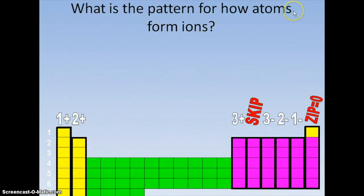All the elements on the periodic table have a pattern for how they're going to form ions. And it goes like this: 1 plus 2 plus 3 plus skip, 3 minus 2 minus 1 minus zip. So everybody in this first column is going to be 1 plus, so everybody over here is going to lose one electron to become 1 positive.